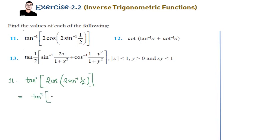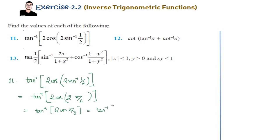It relies on the basics of inverse trigonometric functions. sin inverse of half is pi by 6 because sin(π/6) is half, so it becomes 2 into pi by 6, giving tan inverse of 2cos(π/3). cos(π/3) is half, so 2 into half is 1, giving tan inverse 1, which is π/4. That is the value of this expression.